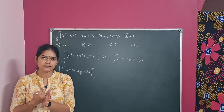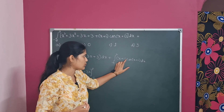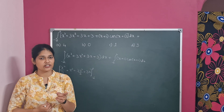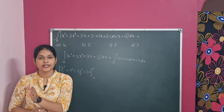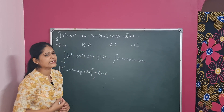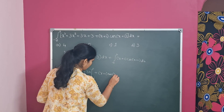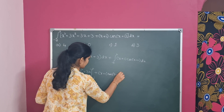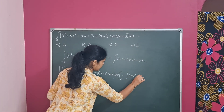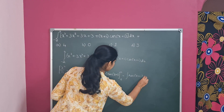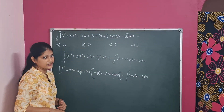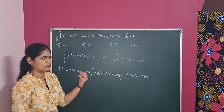The first integral gives [x⁴/4 plus x³ plus 3x²/2 plus 3x] from minus 2 to 0. For the second integral, we use integration by parts with first function (x plus 1) and second function cos(x plus 1). Applying integration by parts — first function times integral of second minus integral of (integral of second times derivative of first) — we get (x plus 1)·sin(x plus 1) from minus 2 to 0, minus the integral of sin(x plus 1) dx from minus 2 to 0.